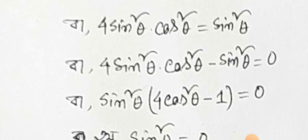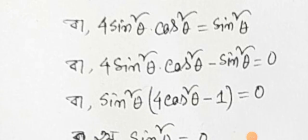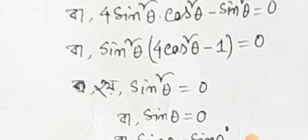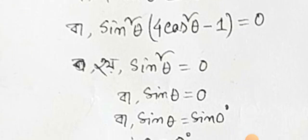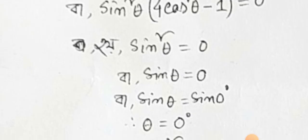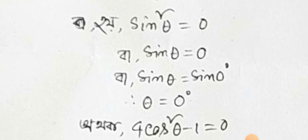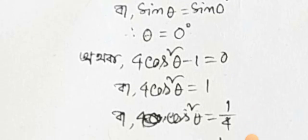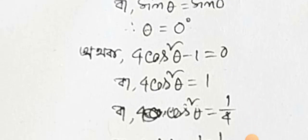We will start with 4 sin square theta into cos square theta minus sin square theta. We will start with 2 sin square theta. We will start with 4 cos square theta minus 1. We will start with 2 sin square theta theta 0. And if we start with sin square theta theta 0, we will start with 4 cos square theta minus 1.